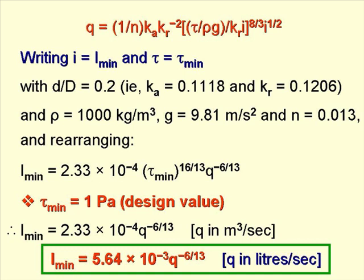we get this equation for i_min. i_min equals 2.33 times 10 to the minus 4, times τ_min to the power 16 over 13, times q to the power minus 6 over 13.